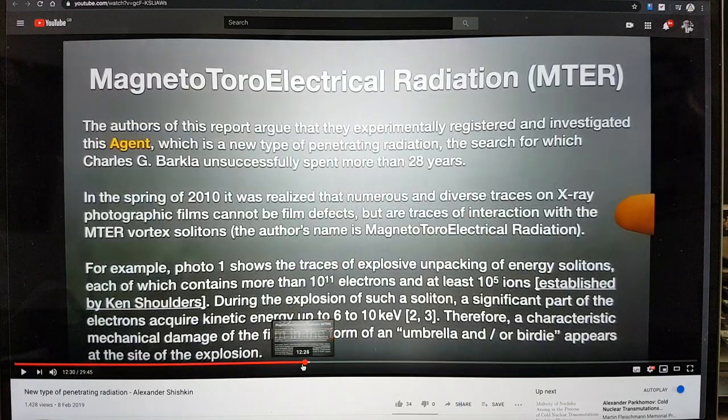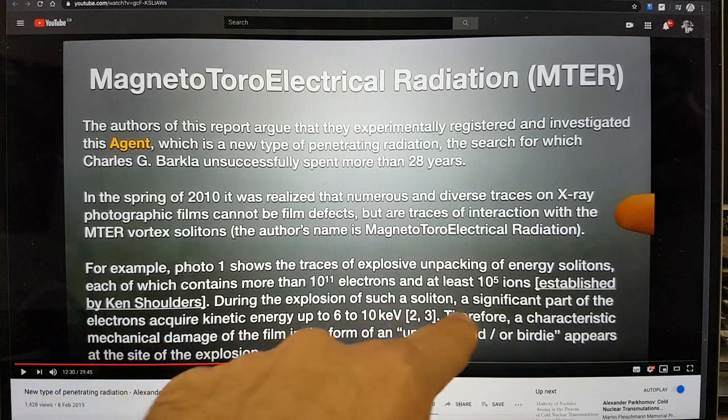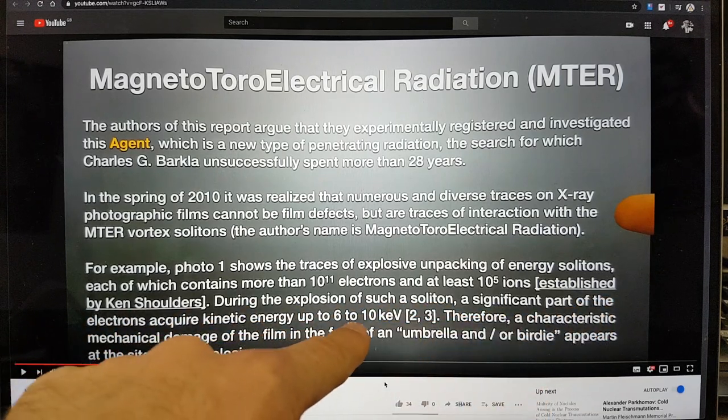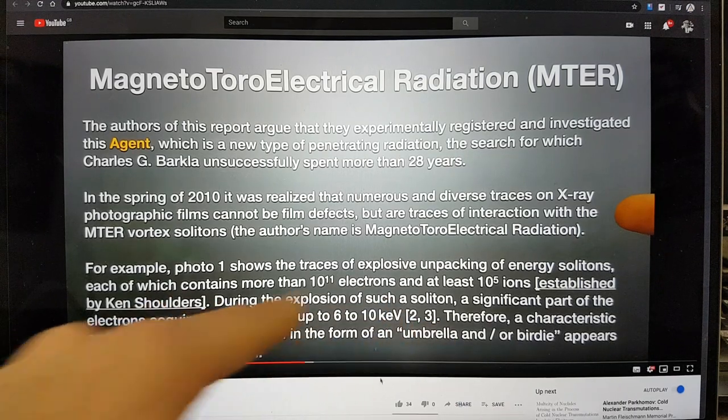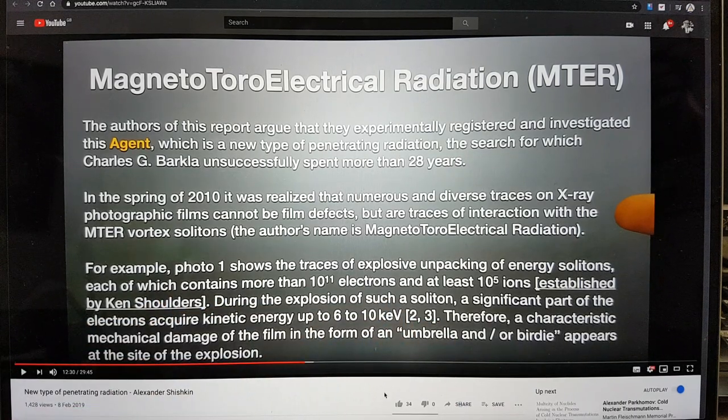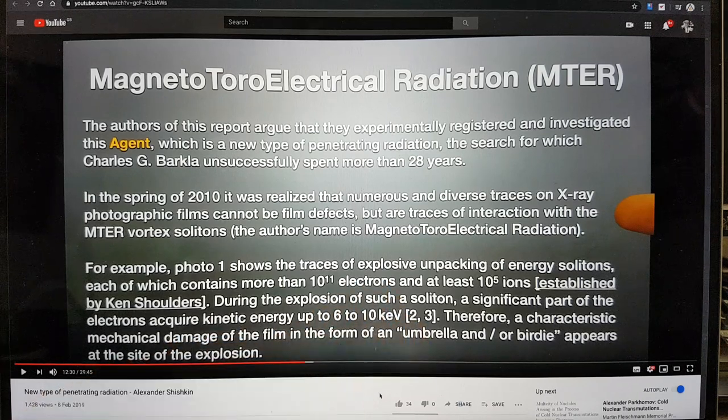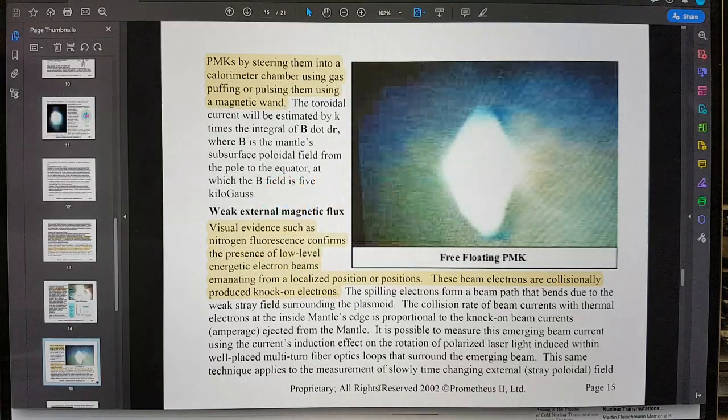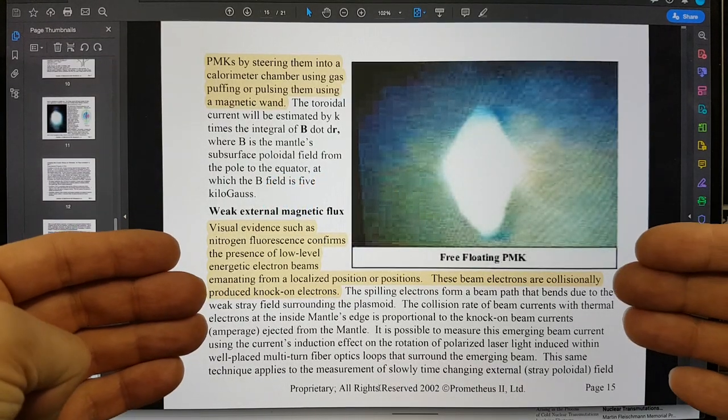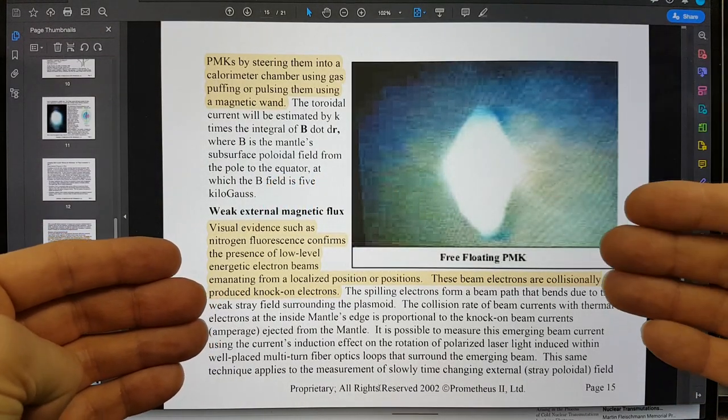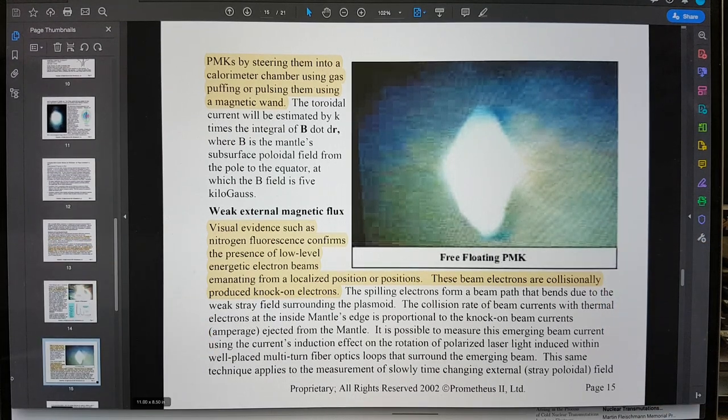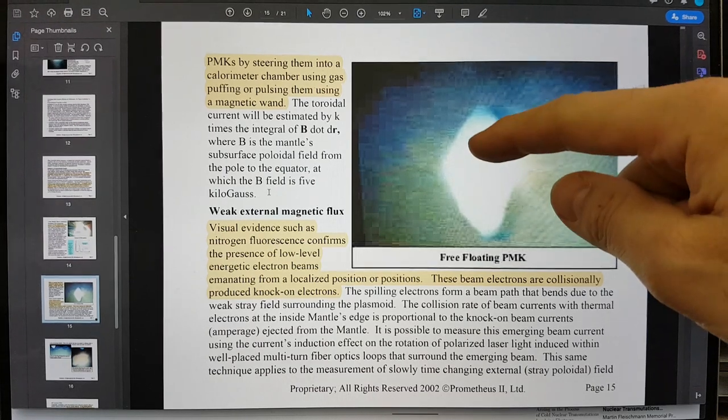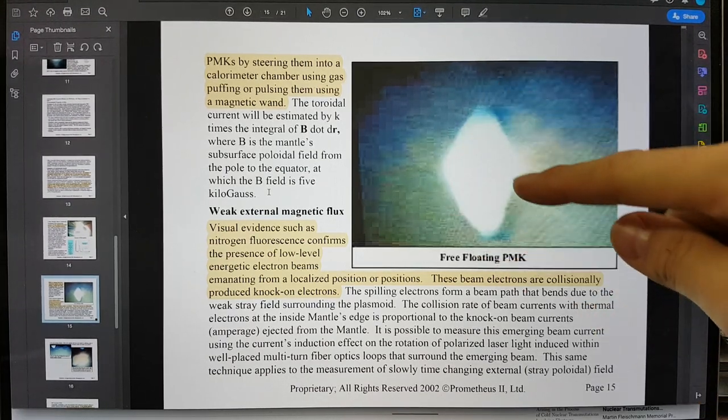So he says during the explosion of such a soliton a significant part of the electrons acquire kinetic energy up to 6 to 10 KV. Okay, so in their observations when one of these things explode they are less energetic than we have observed and the people doing the plasmacs have observed. But anyway, the point is that Shoulder said that these things shed electrons anyway, and that these can be used to generate electricity.